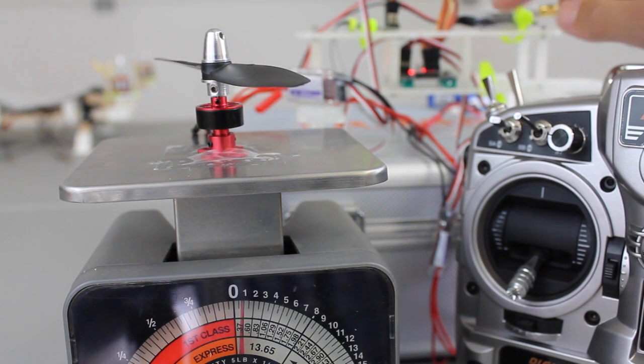Now if you remember this guy when we weighed it in the previous video was about 350 grams all up weight. So you can see where 75% throttle is kind of where you need to be to hover.